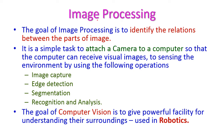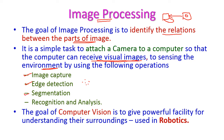Image processing is very helpful to identify the relations between parts of an image. The computer is connected to a camera, and by using the camera it receives continuous visual images to sense the environment. The operations involved are: image capturing using the camera, edge detection of particular objects, segmentation to extract the object, and recognition and analysis of that object. This is otherwise called computer vision, and its goal is to give powerful facility for understanding the surroundings, which is also very helpful for designing robots.